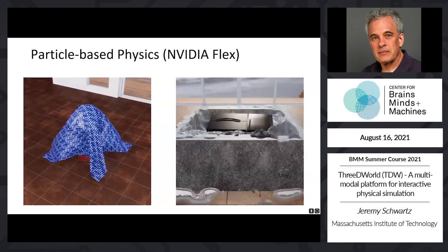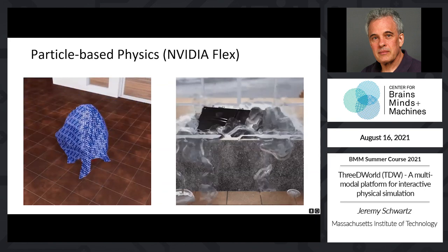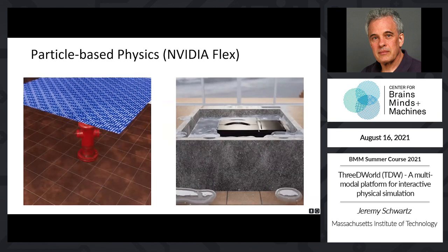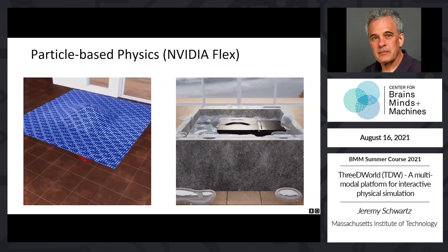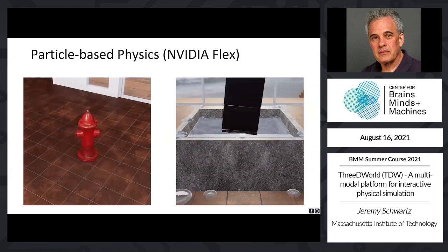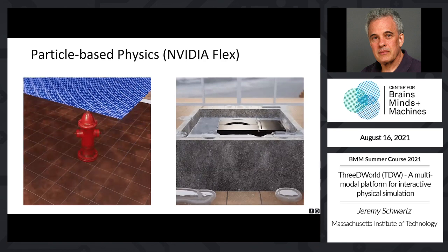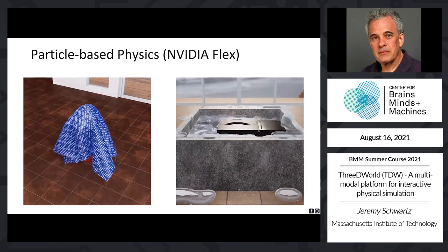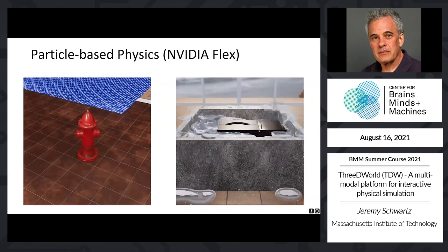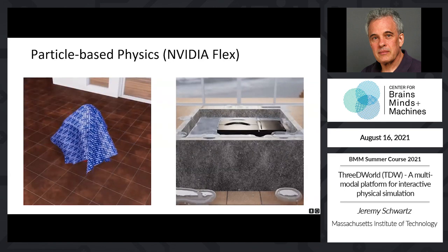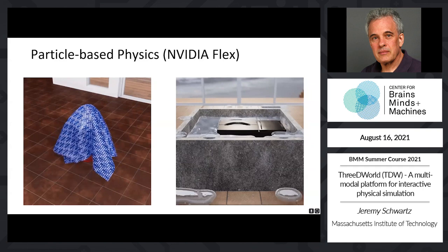The second physics engine used in TDW is NVIDIA Flex, which uses a particle-based representation of the underlying model to manage collisions between different object types. On the left, we use cloth simulation to drop a rubbery sheet which collides with a rigid body fire hydrant object. On the right, a fridge model is dropped into a pool of water causing significant displacement and splashing. Dropping objects of different sizes, masses, and materials into fluids and observing the splash behavior can be useful for estimating these quantities. This type of unified object representation can help machine learning models use both underlying physics and rendered images to learn a physical and visual representation of the world.